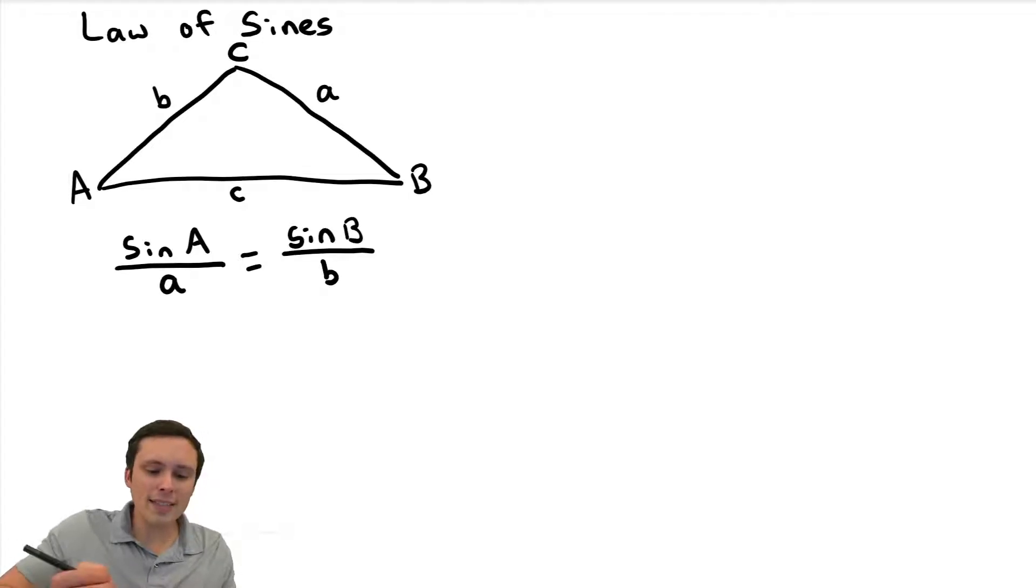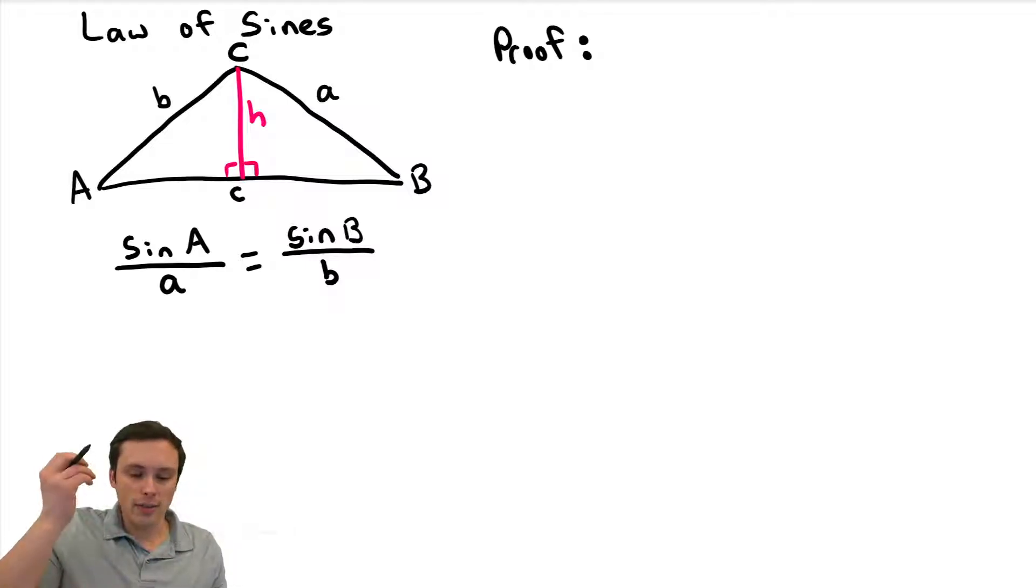Now, why is that the case? In other words, can we prove that this is always true? Well, hmm, let's see. I think the idea here is that we're going to need to do sine, and normally we do that in right triangles. So let's get ourselves a right triangle by drawing a line that I would think of as the height of this triangle if I was calculating its area. So I'm going to call that H. And now we have two right triangles.